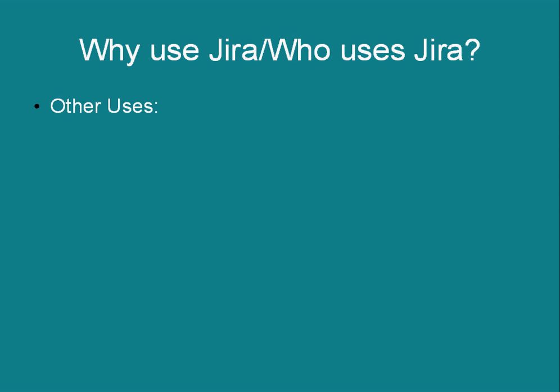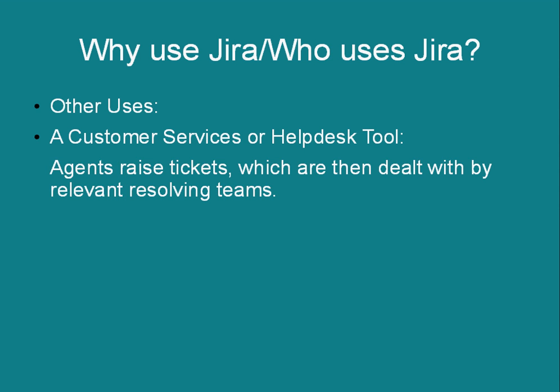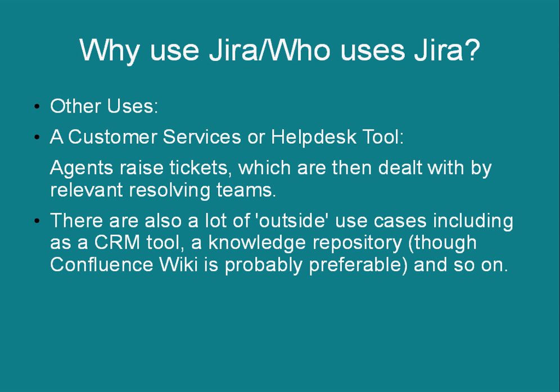Other uses, a bit ancillary: JIRA can work as a customer services or help desk tool, where agents can raise tickets which are then dealt with by a relevant resolving team. There are also other uses such as a CRM tool — a client relationship management tool — though I generally wouldn't advocate that. I also wouldn't advocate it as a knowledge repository, because Confluence, another Atlassian tool which is essentially a shared wiki, is preferable. If you're trying to use it for very extreme cases, check that there's not a better tool available.